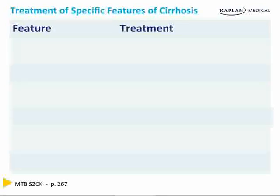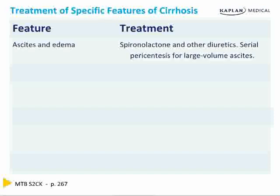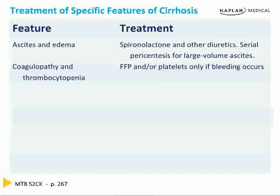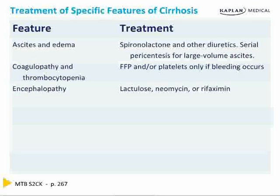For treating specific features of cirrhosis: for ascites and edema, give spironolactone and other diuretics such as Lasix; serial large-volume taps are also helpful. For coagulopathy and thrombocytopenia, give FFP or platelets if bleeding occurs. For encephalopathy, give lactulose, neomycin, or rifaximin.